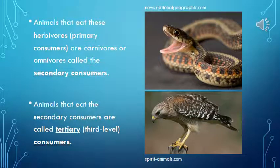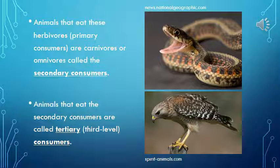Animals that eat herbivores (primary consumers) are carnivores or omnivores called secondary consumers. Animals that eat the secondary consumers are called tertiary, or third-level, consumers.